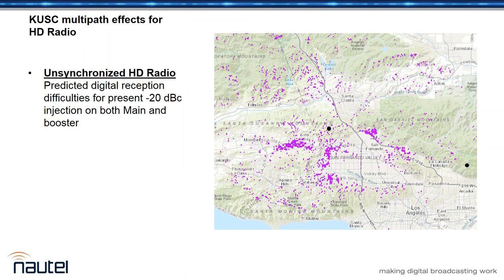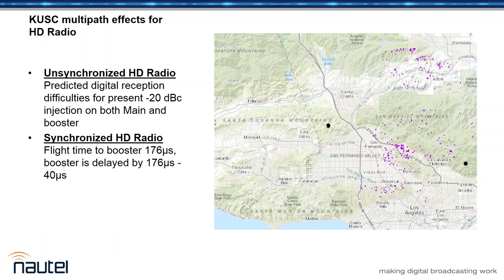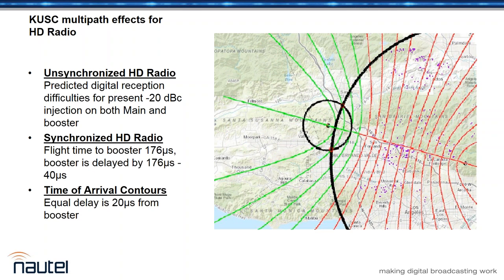We ran RF coverage studies for the KUSC setup. Looking at unsynchronized HD radio, any area where signals are within about 7 dB — shown as purple dots — represents potential receiver confusion or HD drops. When we synchronized the system, we superimposed the constant equal-delay zones on the coverage map: everywhere shown in green is within 40 microseconds, and in those areas the D/U ratio doesn't matter — we're good. To achieve this, we held off the booster by 176 microseconds to calibrate out the main-to-booster flight time, then took out an additional 40 microseconds to offset the wavefronts.